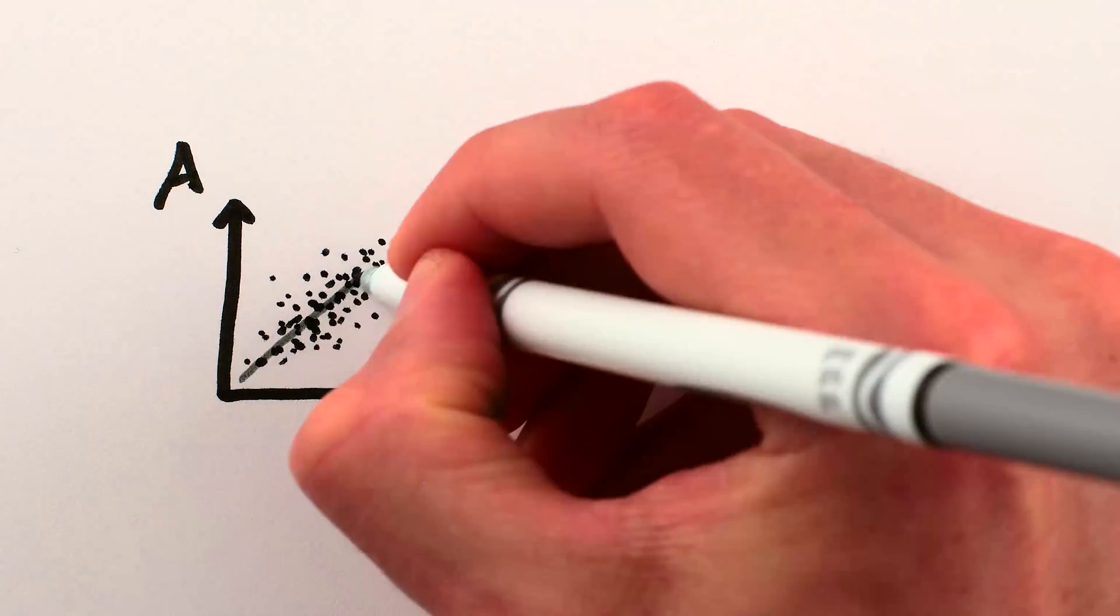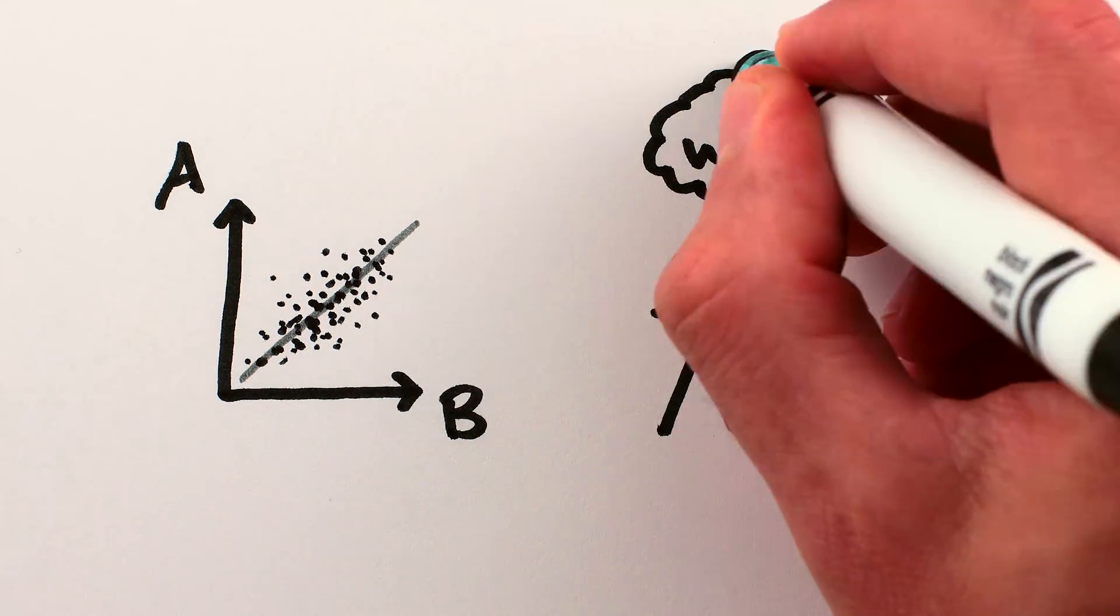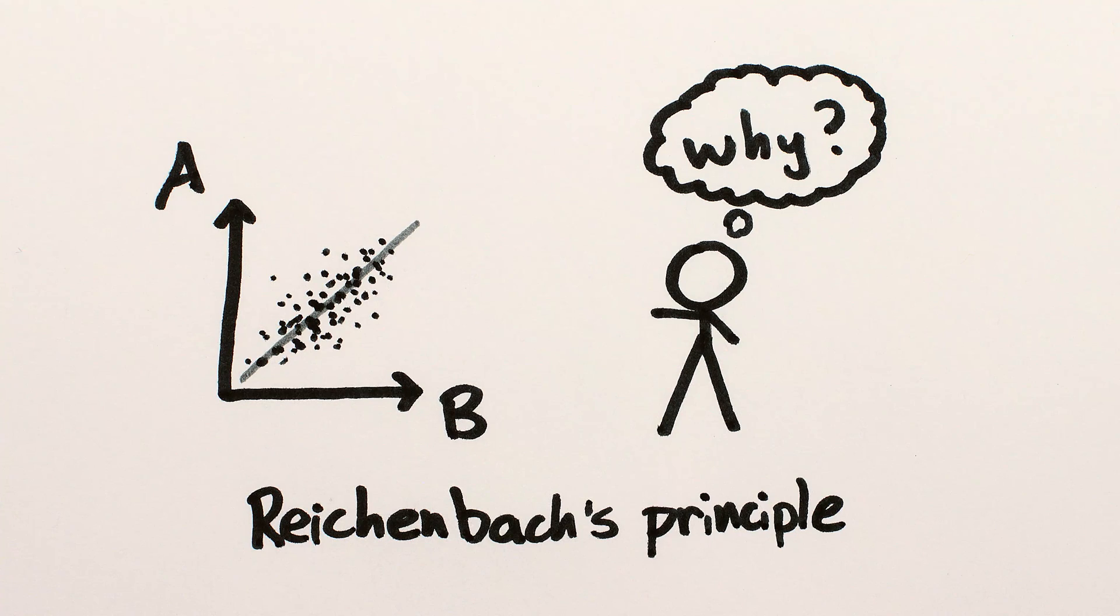Okay, correlations and causations footnotes. In the main video, I said that when you find a correlation, it's natural to look for explanations or causes of it. This is Reichenbach's principle.